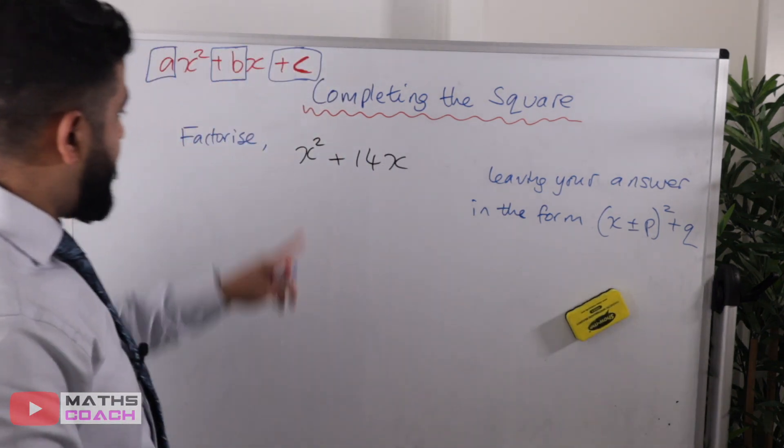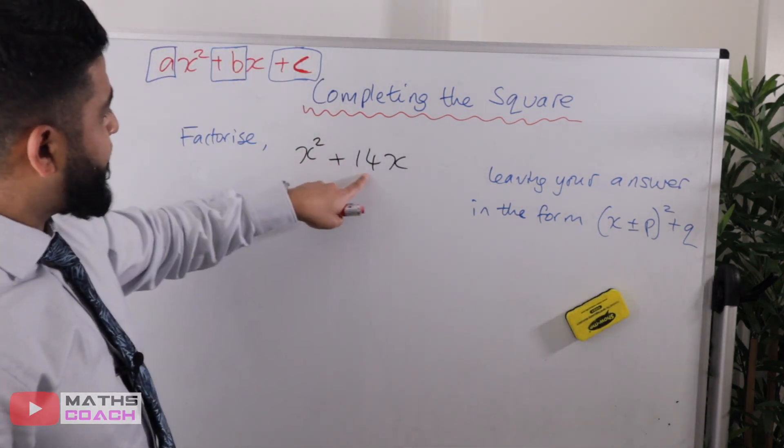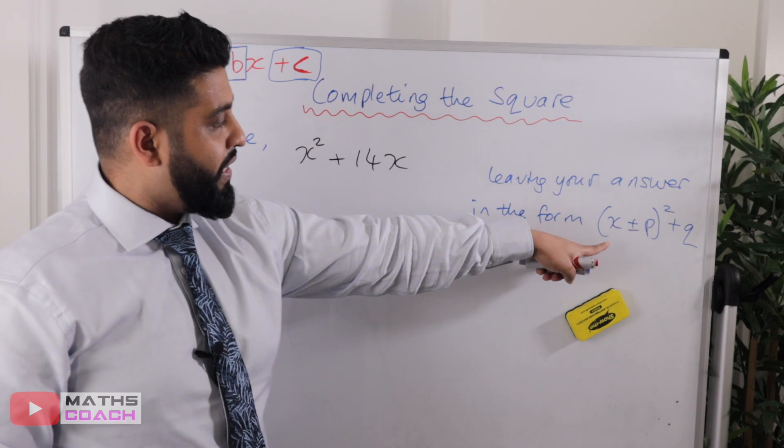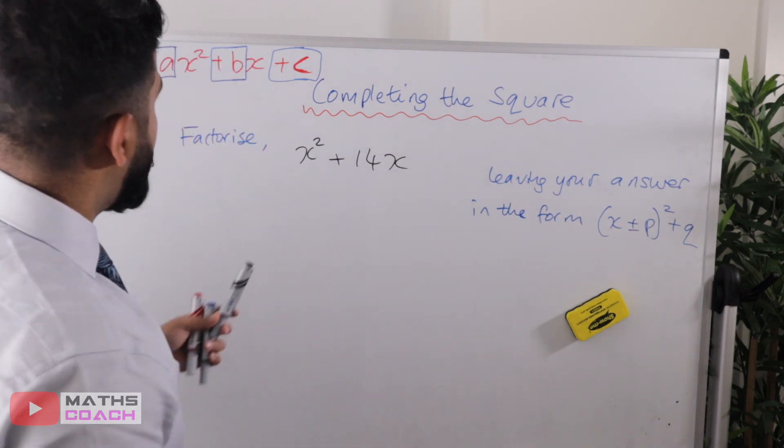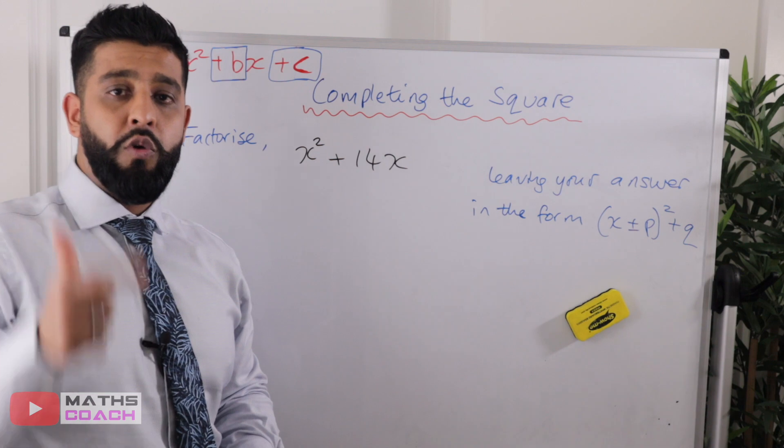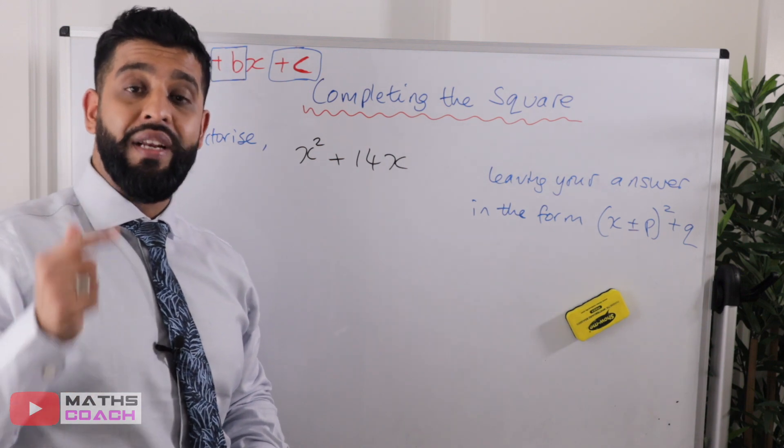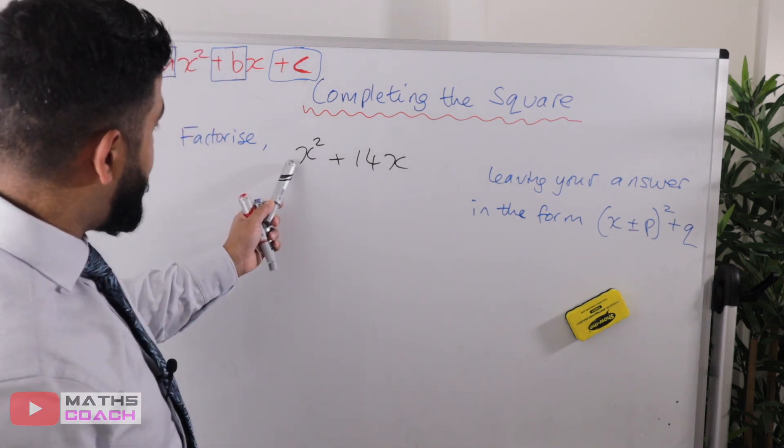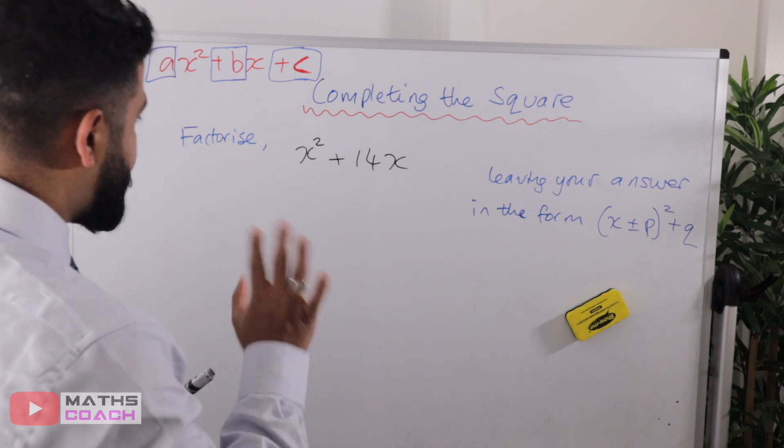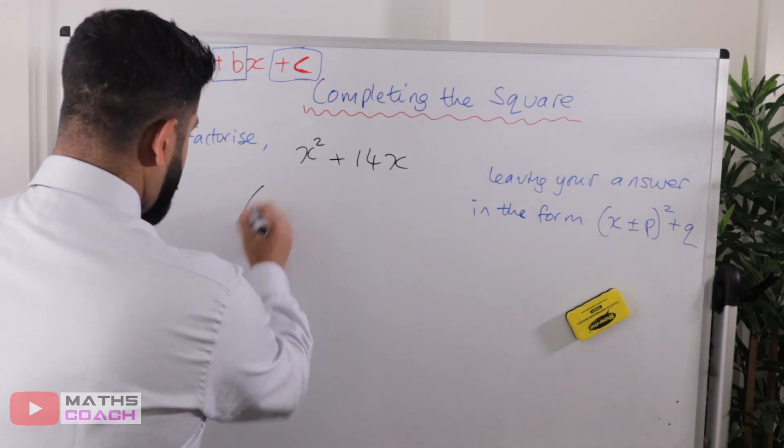On to our next example. We want to factorize x² + 14x and leave our answer in that form. So once again, step number one, want to make sure that the coefficient of x² is one. The coefficient of x squared, is it one? Yes, it is. It's one. So that's good. So we'll write out brackets.